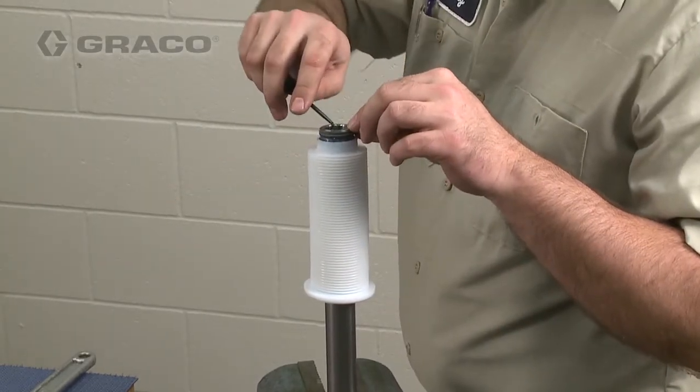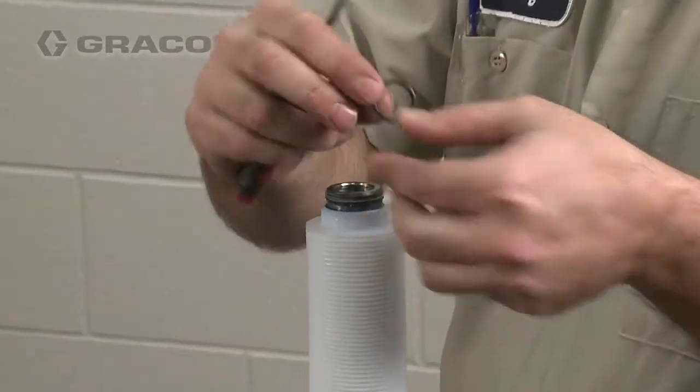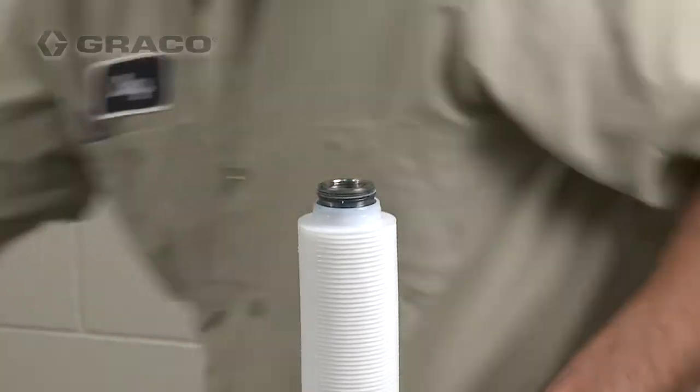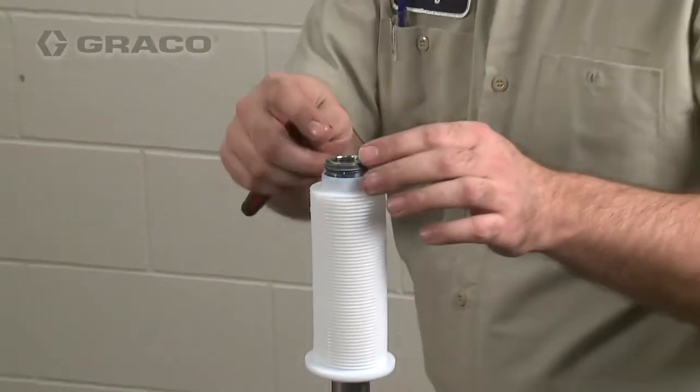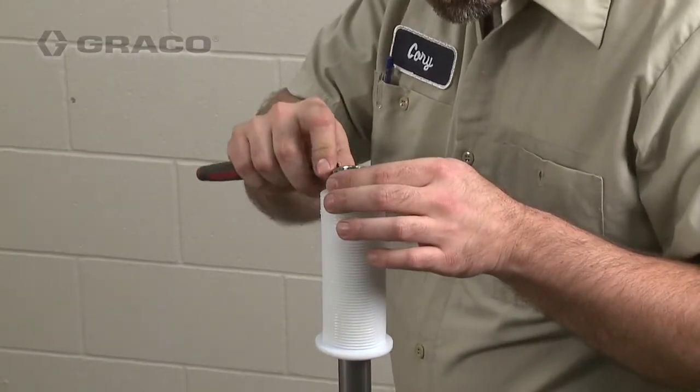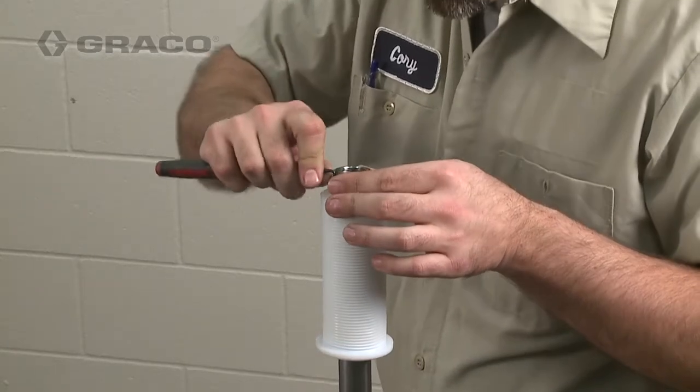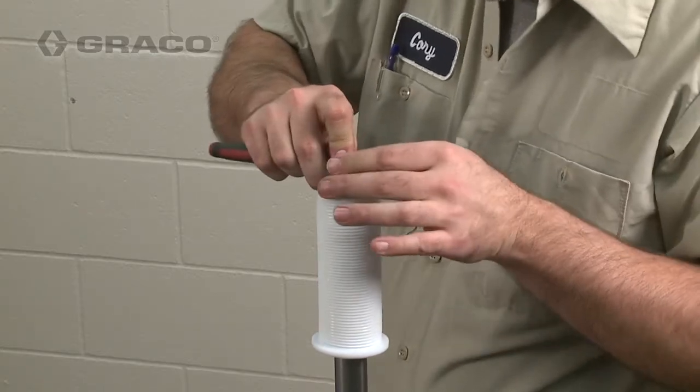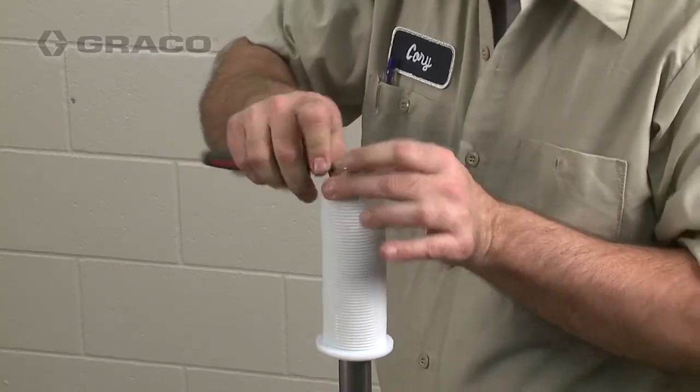Remove the o-ring from the bellows sleeve and then work the bellows seal up and off the sleeve.